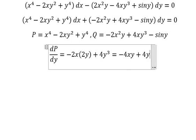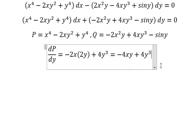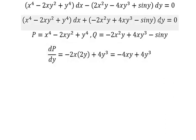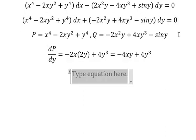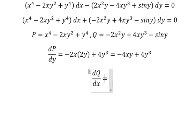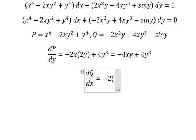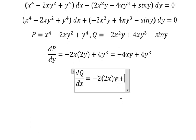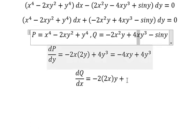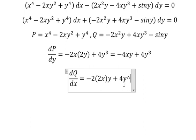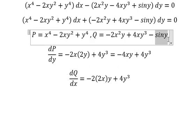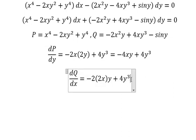So we have dQ/dx. That means we need to do the derivative of Q with respect to x. This one has 2x. This one has y. This one doesn't have x, so we get zero. We simplify.